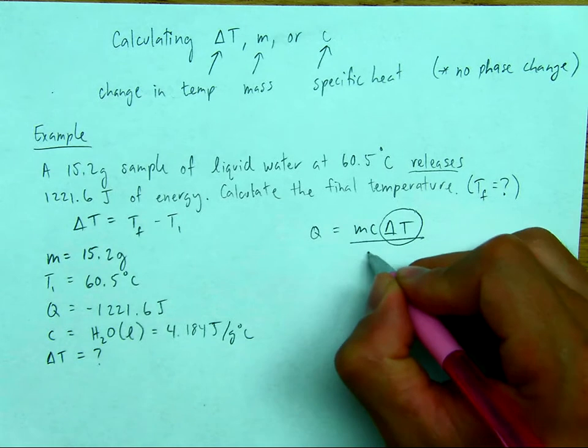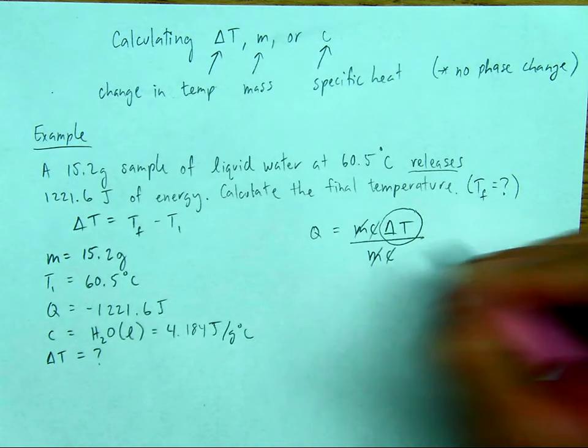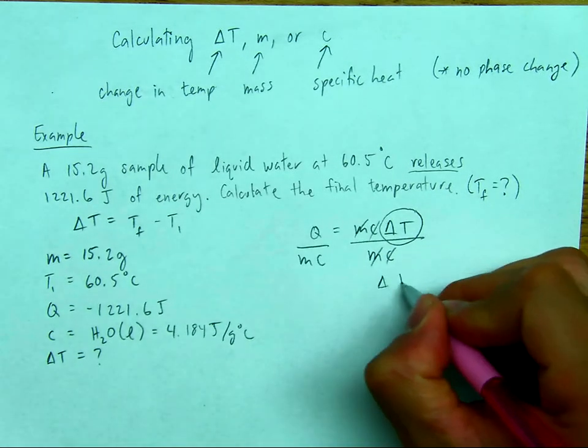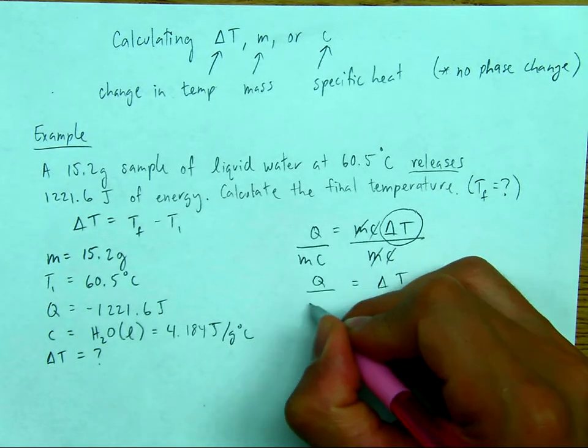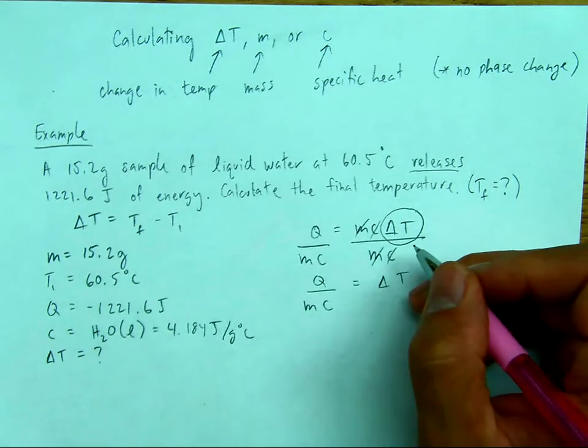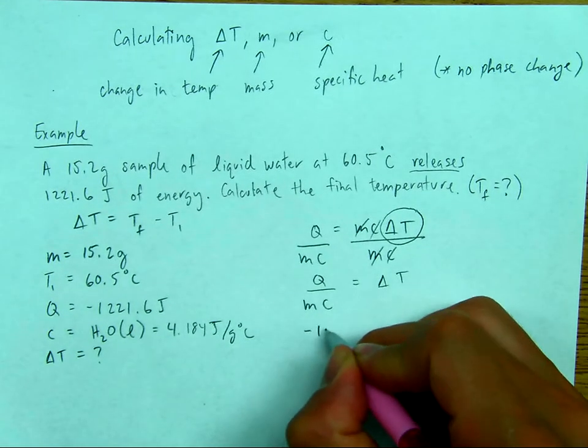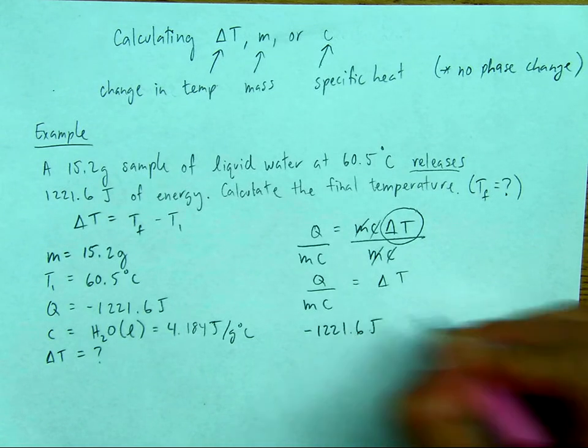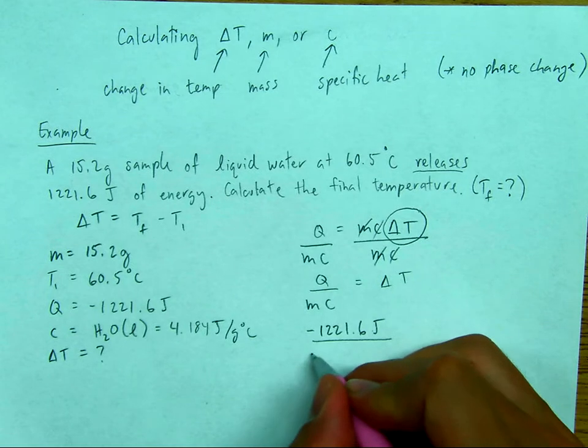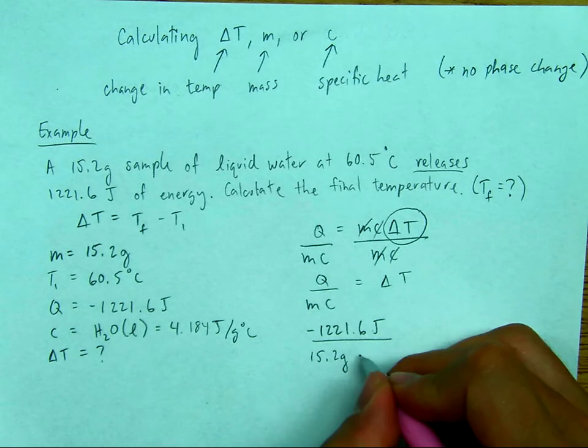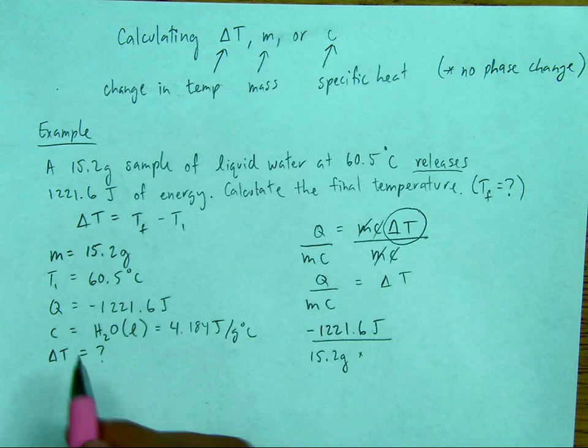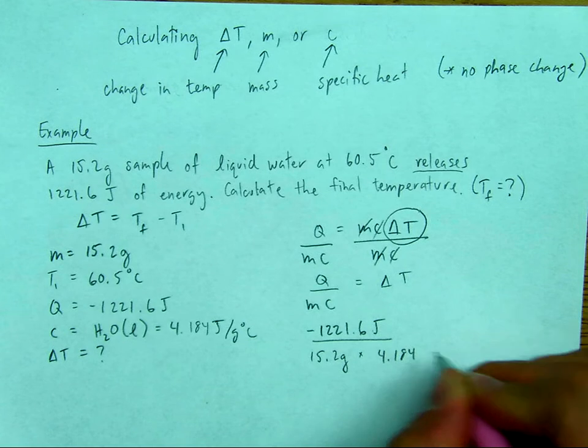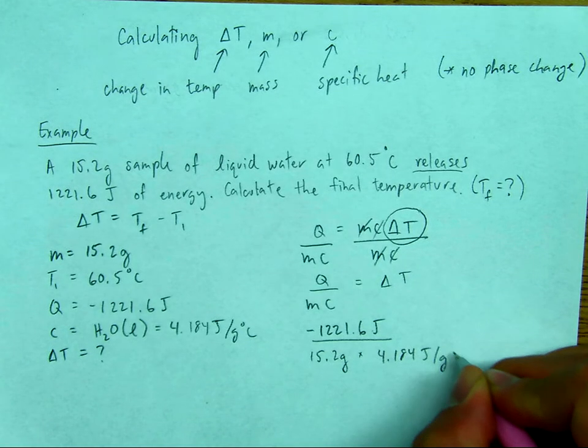So I'm trying to isolate for delta T. So I'll divide both sides by MC, just like we did before. M over C. Our change in temperature will equal Q over MC. Okay. So Q is negative 1,221.6 joules. The mass is 15.2 grams. And the specific heat or C here for liquid H2O is 4.184 joules per gram degrees Celsius.